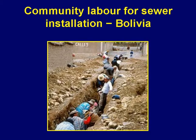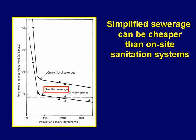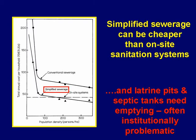One way of reducing the costs of simplified or community-based sewerage is to get the intended users to contribute their labour to excavate the sewer trenches. This might not always be feasible, but it's certainly worth considering and discussing with the community. It's important to remember that simplified sewerage, depending on the local population density, can be cheaper than on-site systems. Too many people who should perhaps know better believe that sewerage is always more expensive than on-site systems. It's also important to remember that latrine pits will need to be emptied, and this can often be very problematic, especially for the local institution that should be planning for and overseeing it.